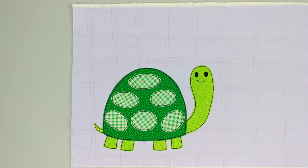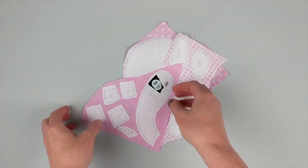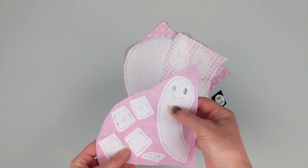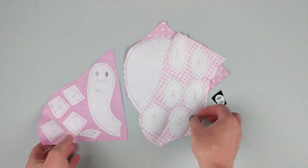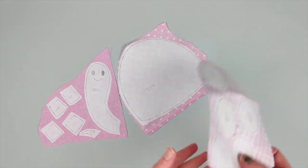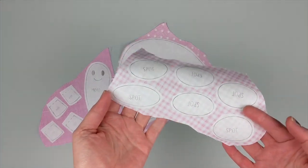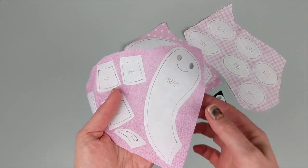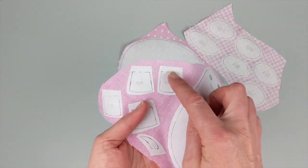Here's how to make him. The first thing you're going to do is print or trace the pattern onto the paper side of some fusible adhesive, and then you're going to roughly cut out all the pieces.